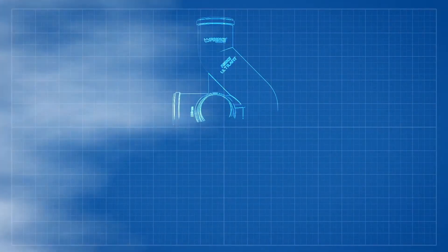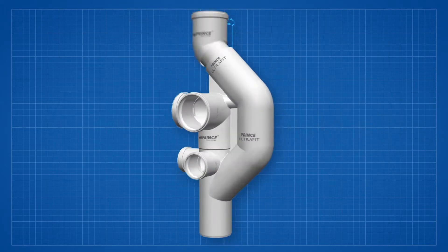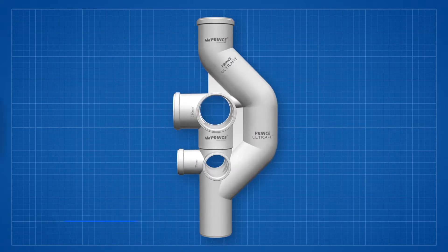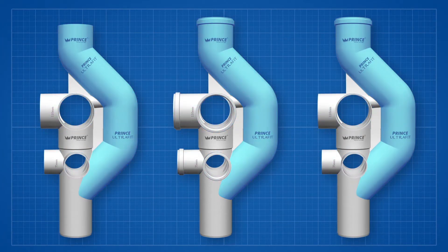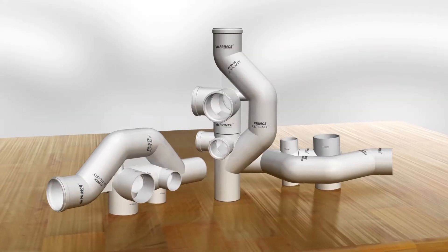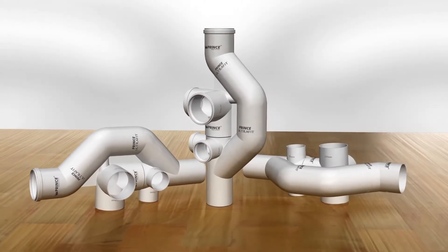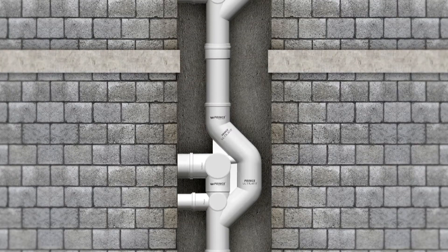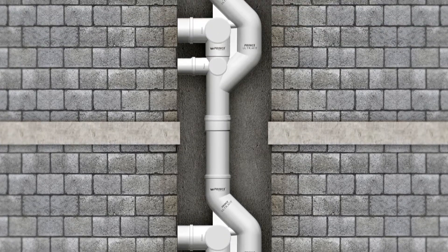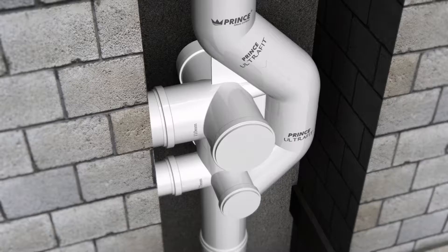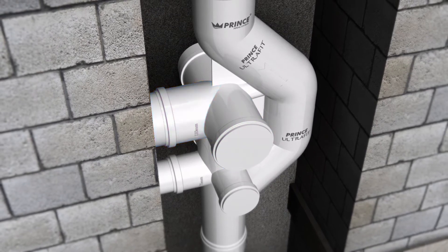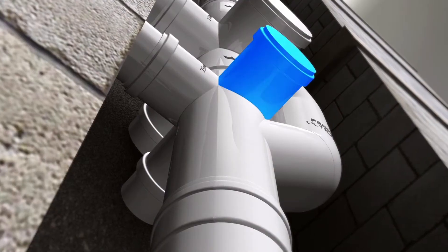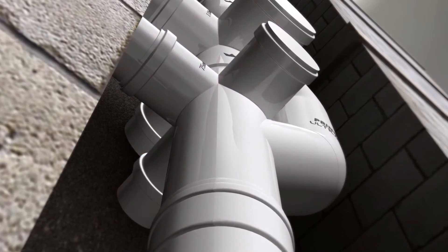A unique and advanced product, the Aerator efficiently combines functions into a single system, eliminating the need for three separate lines for soil, waste, and vent. Designed specifically for high-rise buildings, it is ideal for hotels and multi-story residential and commercial properties. A single Aerator on one floor allows up to six connections — three for soil, that is WC line of size 110 millimeter, and three for wastewater line of size 75 millimeter.